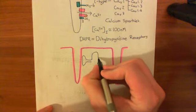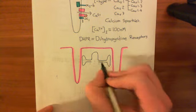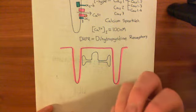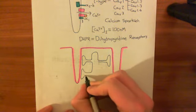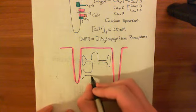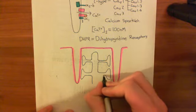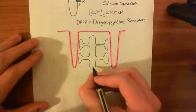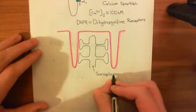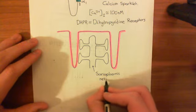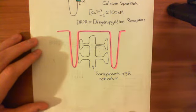We have this intracellular organelle called the sarcoplasmic reticulum. The sarcolemma is another name for the plasma membrane of a muscle cell; the sarcoplasmic reticulum is just another name for the endoplasmic reticulum when we're talking about muscles. It gives off facets which form almost synapse-like connections with the plasma membrane. The sarcoplasmic reticulum is often abbreviated as the SR.